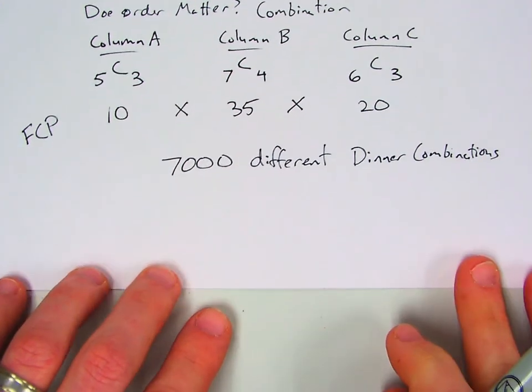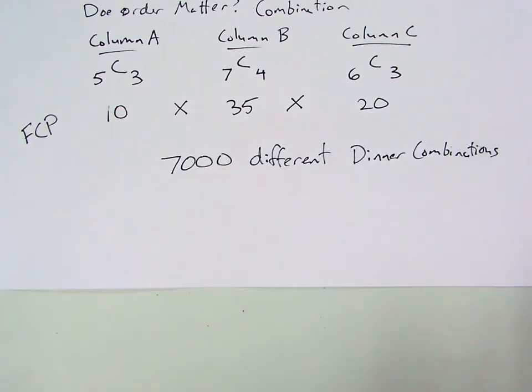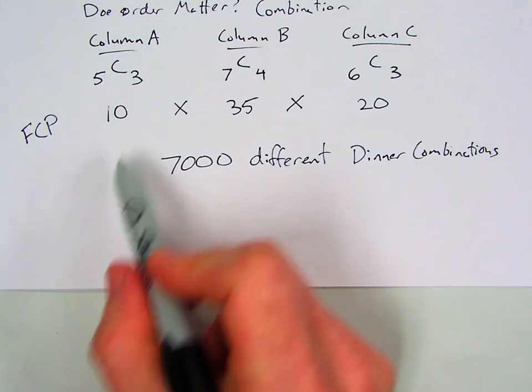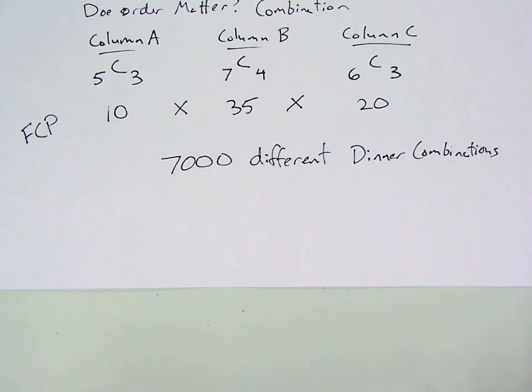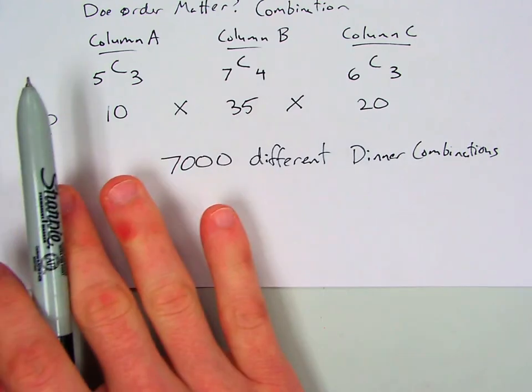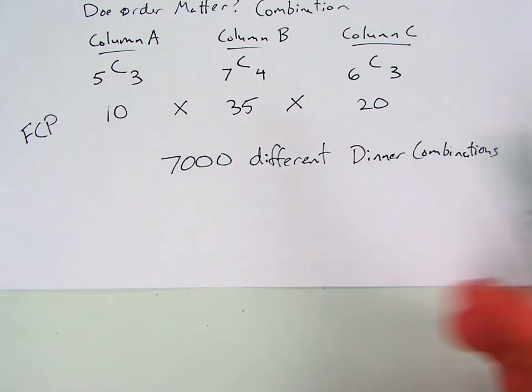So you could eat at Su Wong seven thousand times without ever having the exact same meal. And what's funny about that is my wife, every time we go to Wahoo's every Wednesday, and, you know, there's tons of combinations you can do between bowls and tacos and enchiladas, and she gets the same thing every time for the last ten years. So anyway, just because they're there doesn't mean you have to use them. But next time we are going to learn how we're going to take these combinations and apply them to probability. And today we're just going to stick with trying to determine when to use permutations, when to use combinations, and when to use fundamental counting principle to find our total number of possibilities.